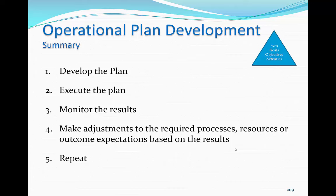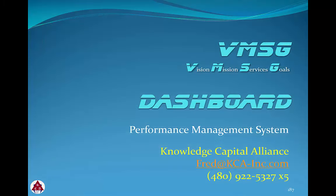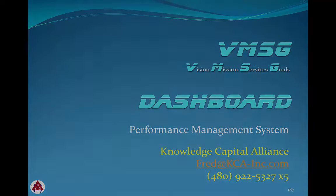By following these steps, you can develop, execute, and manage an effective operational plan over many planning cycles. In summary, the operational planning process encompasses: develop the plan, execute the plan, monitor the results, and make adjustments to the required processes, resources, or outcome expectations based on the results — then repeat as necessary. This concludes this module in the training series for the dashboard. If you have any questions or would like more information on the VMSG dashboard performance management system, please contact us with the contact information shown.